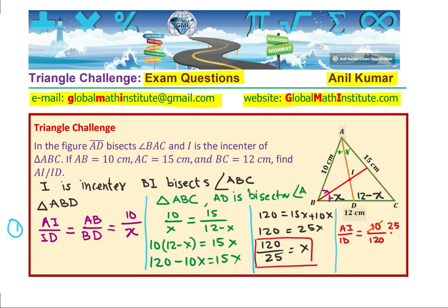You see how we have done this? So 10 over 120, then cancel. And we have our ratio, which is the answer: AI over ID is equal to 25 over 12.